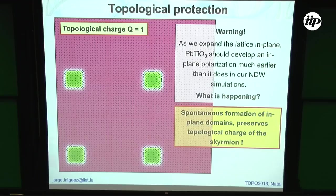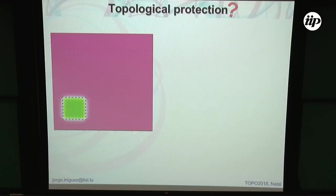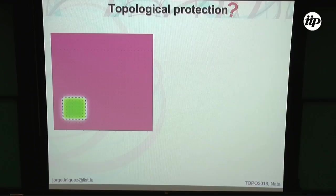I was calling this topological protection, and in some sense I think it is. But I have some doubts. There is a fundamental difference between electric dipoles and spins or liquid crystals. The spins don't disappear — spins are always there, and molecules in a liquid crystal are always there. But my dipoles can disappear, or my in-plane component of the dipoles can disappear.